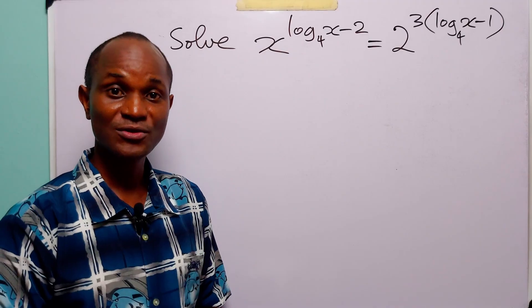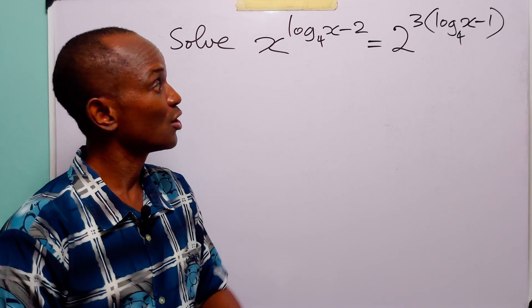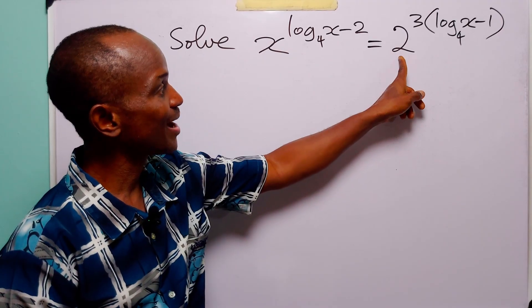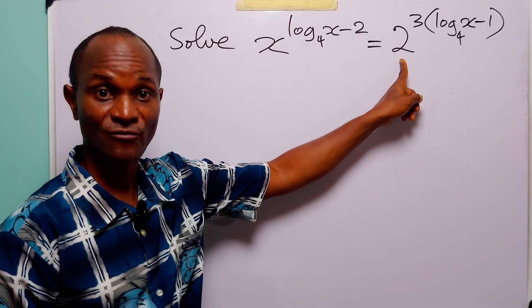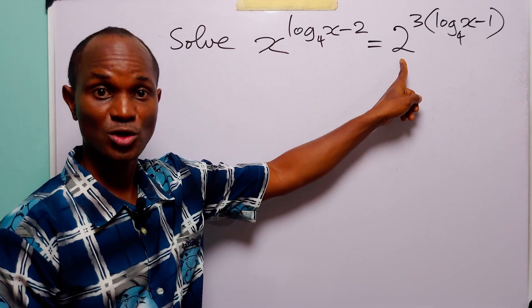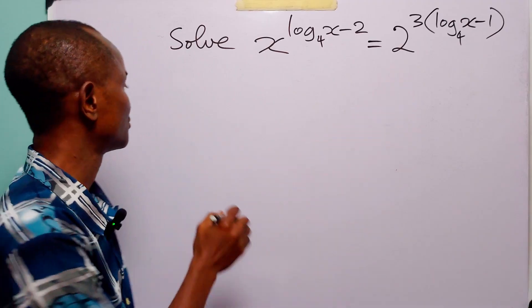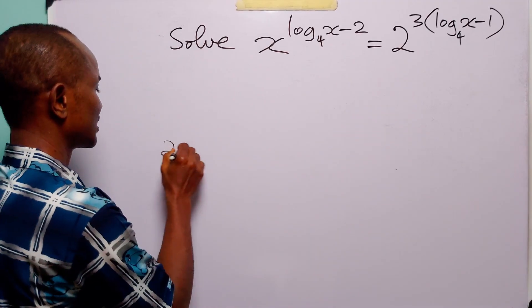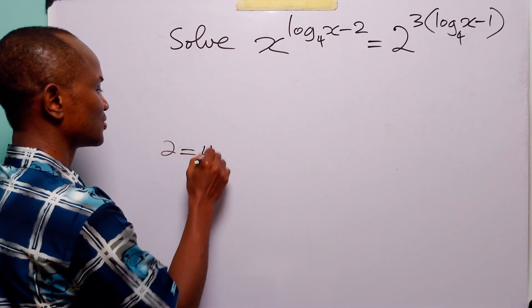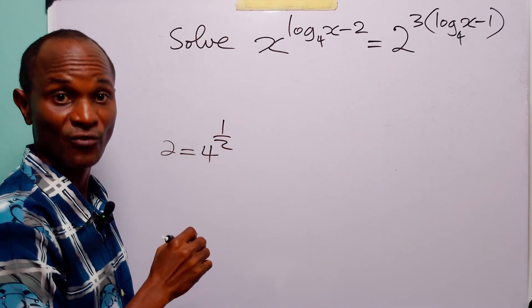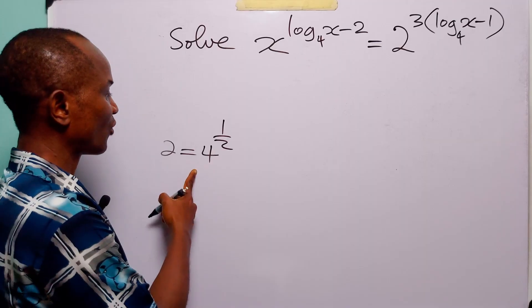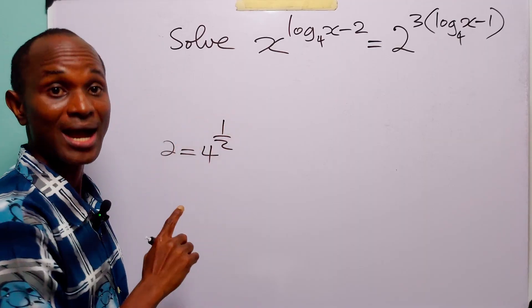Now to do this, the first thing I am going to do will be to rewrite these two in terms of 4. Of course, we know that 2 is equal to the square root of 4 — that is, 4 to the power half.